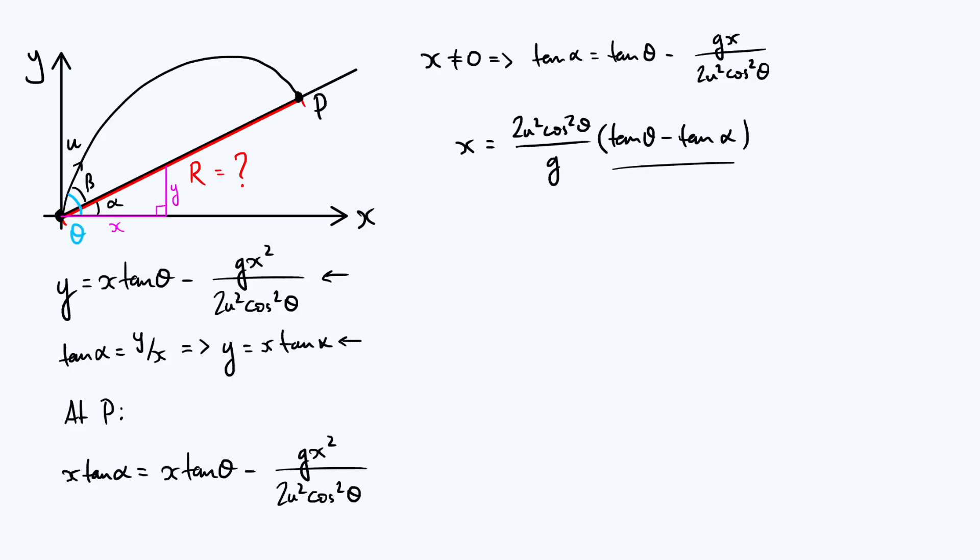Now this of course is just the x coordinate of point P. What we really want is the length of that red line r, but r follows straightforwardly from x actually. Imagine making a right angle triangle whose hypotenuse was that big red side and the other sides were parallel to the x and y axes. Then you can see that r is just going to be the square root of that x value squared plus the y coordinate of P squared. We already know the y coordinate because y is x tan alpha and we have an explicit expression for x now.